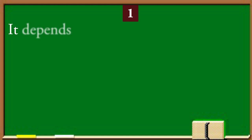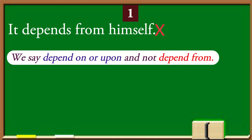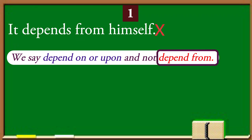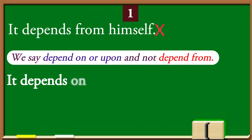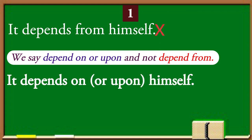It depends from himself — this is incorrect. We say depend on or upon, and not depend from. I am reading the correct sentence, please repeat after me: It depends on or upon himself.